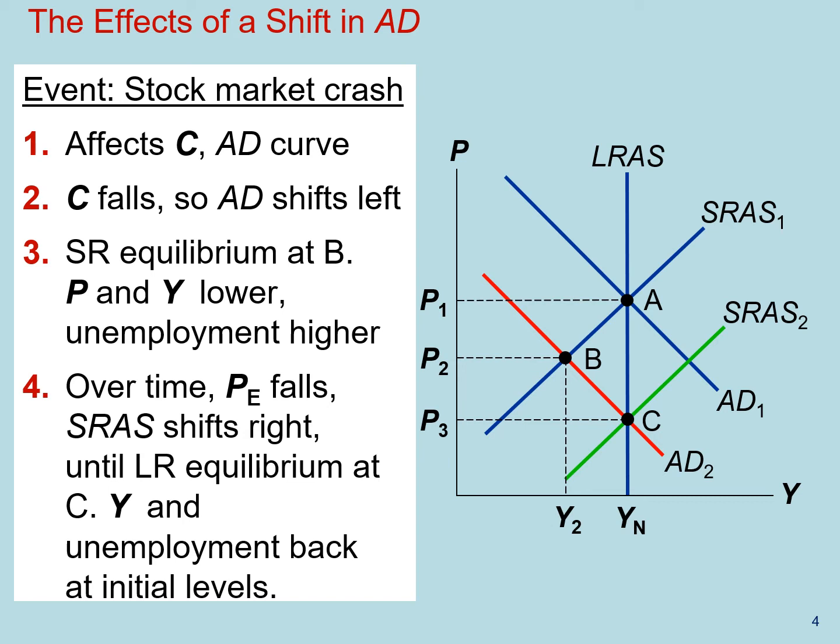And the price expectations catch up to reality once again and are equal to the price level. Notice that in the absence of policy intervention, the economy self-corrects. Of course, this process takes time and policymakers might not want to wait. At point B, policymakers could potentially use fiscal or monetary policy to shift aggregate demand to the right and move the economy back to point A. But we will talk about policy interventions extensively in the future.